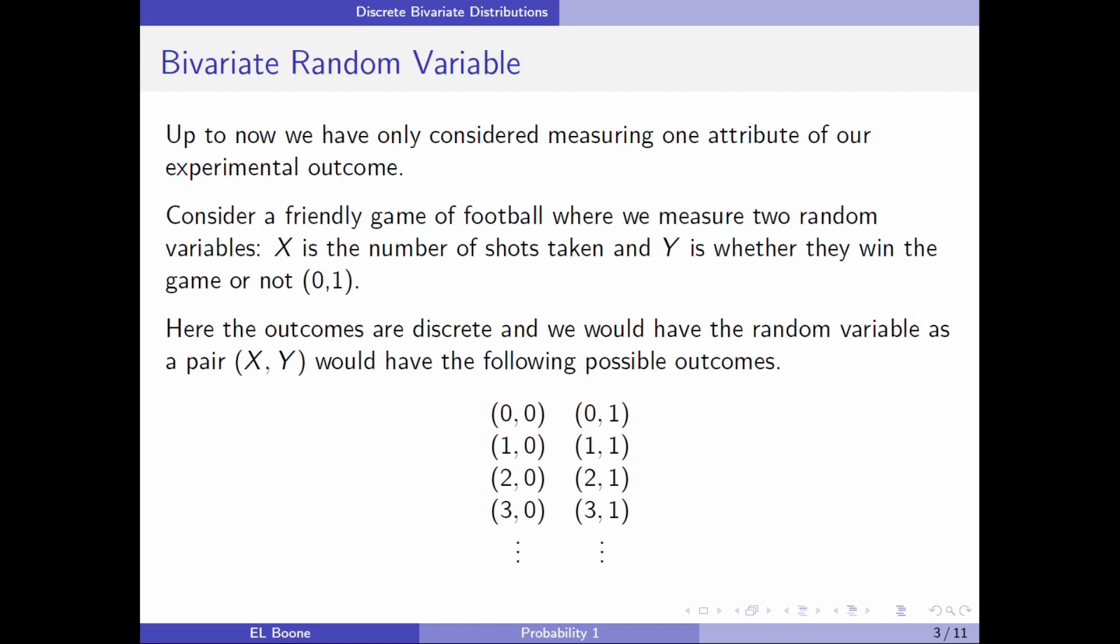Now we want to change our focus a little bit. We're going to go all the way back to the sample space. Up to now, we've only considered measuring one attribute of our experimental outcome at a time. Like the fish, we could measure the height, weight, width, or value, but we only did one at a time. What if we wanted to look at something that happens more than one at a time? First, we're going to start with the discrete case.